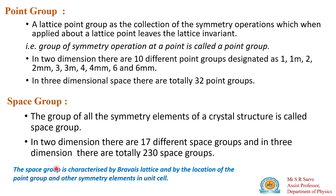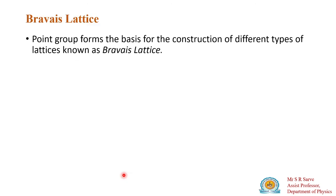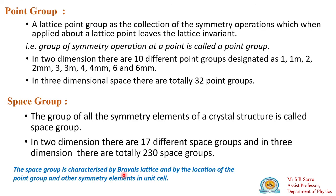A space group is characterized by the Bravais lattice and by the location of the point group and other symmetry elements in the unit cell. In two dimensions there are 17 space groups, and in three dimensions there are 230 space groups. In the next lecture we are going to learn about the Bravais lattice.